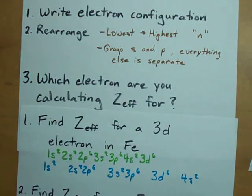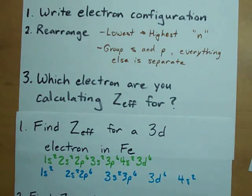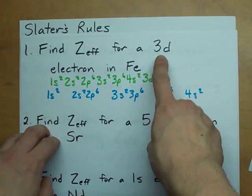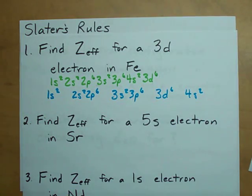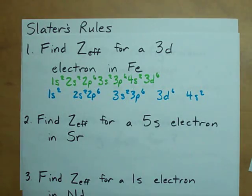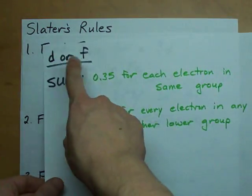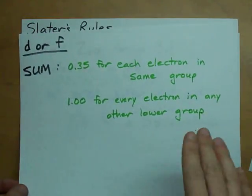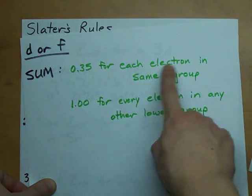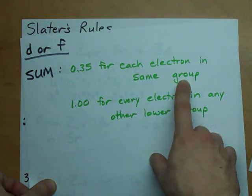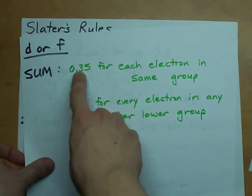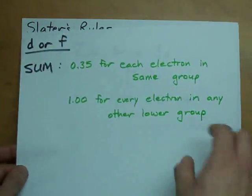Next, you have to figure out which electron you're calculating the Z_eff or effective nuclear charge for. In this case, it's a 3d electron. And depending on what kind of electron you're doing it for, you have different rules. For a d or f electron, you're going to add up 0.35 for every electron in the same group and 1 for every electron in a lower group.